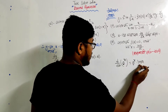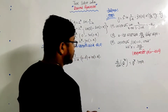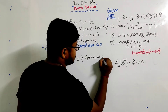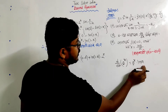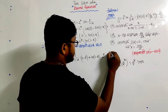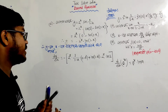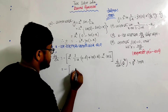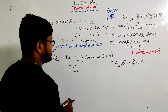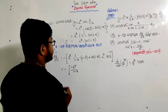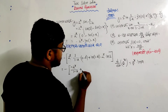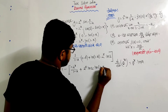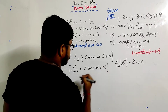The derivative of 2 to the power x is 2 to the power x into ln 2. So applying the product rule: the first function differentiated gives 2 to the power x into ln 2, and then the second function ln of 1 minus x remains.